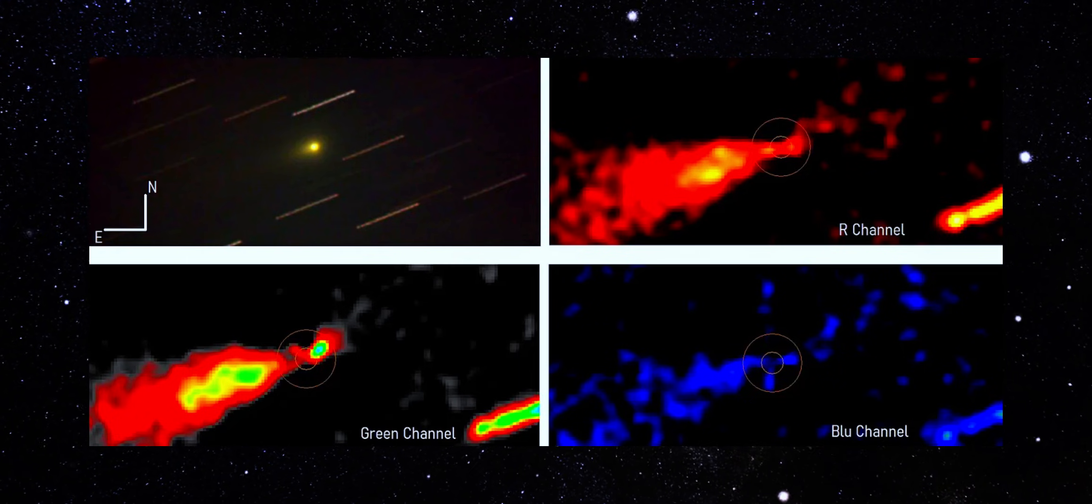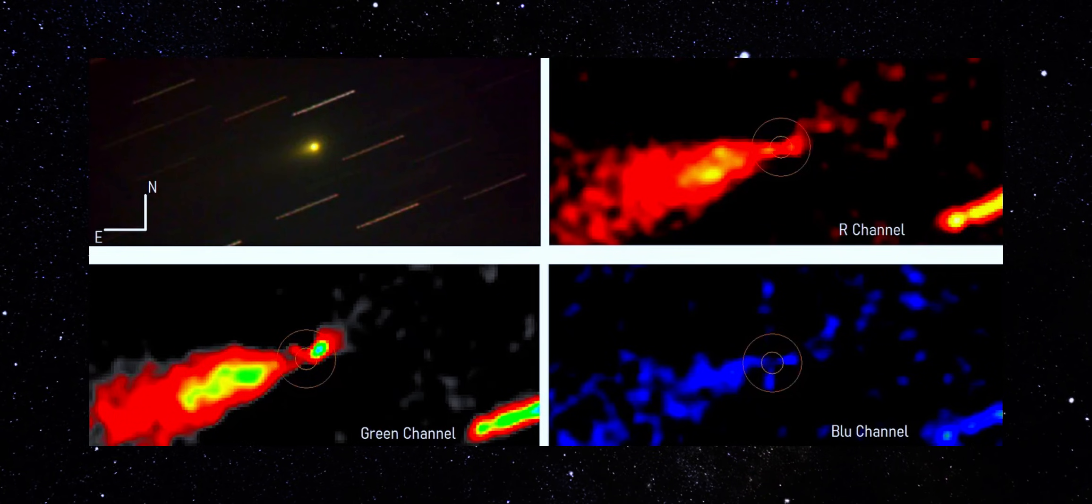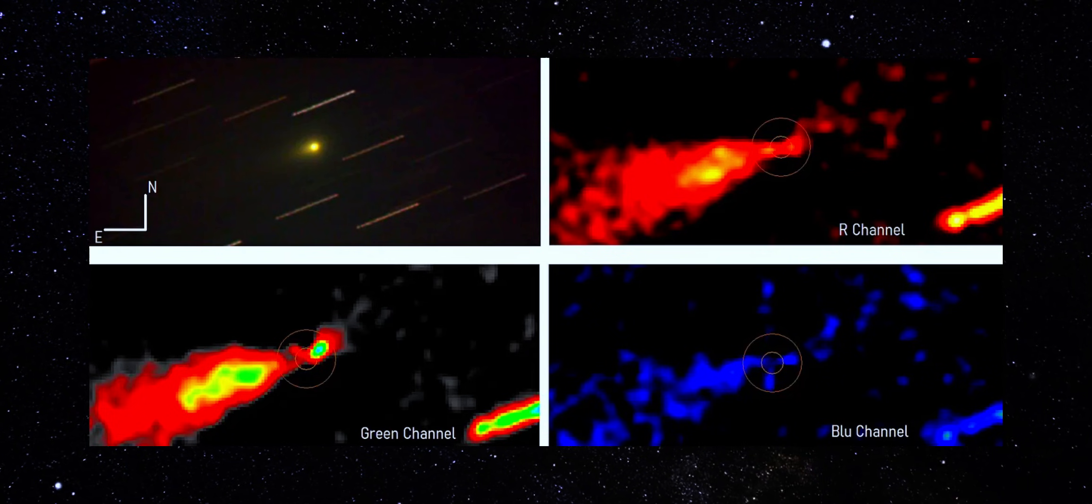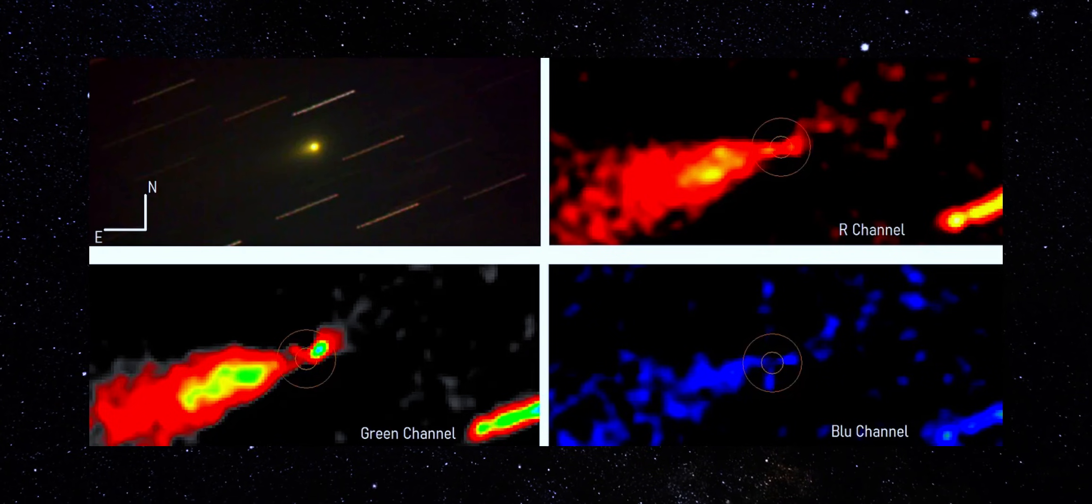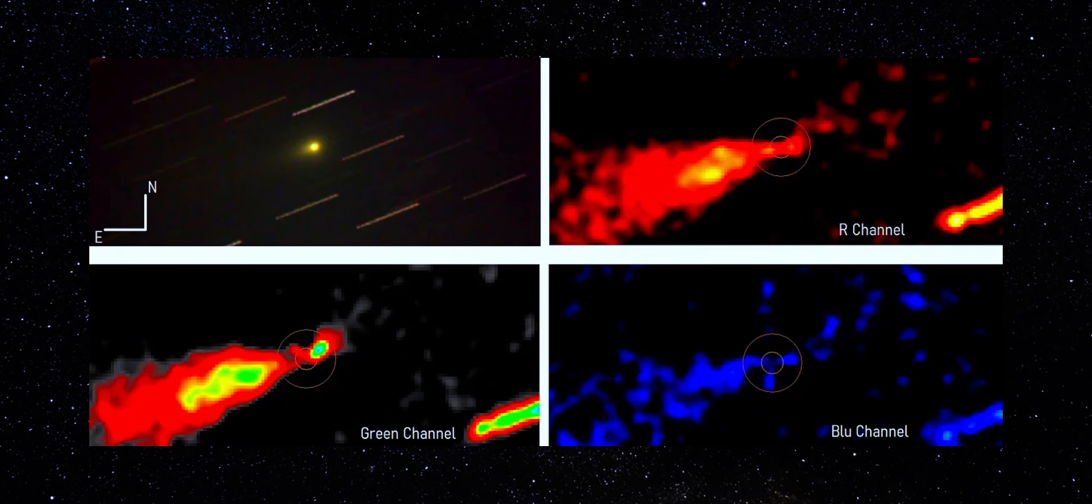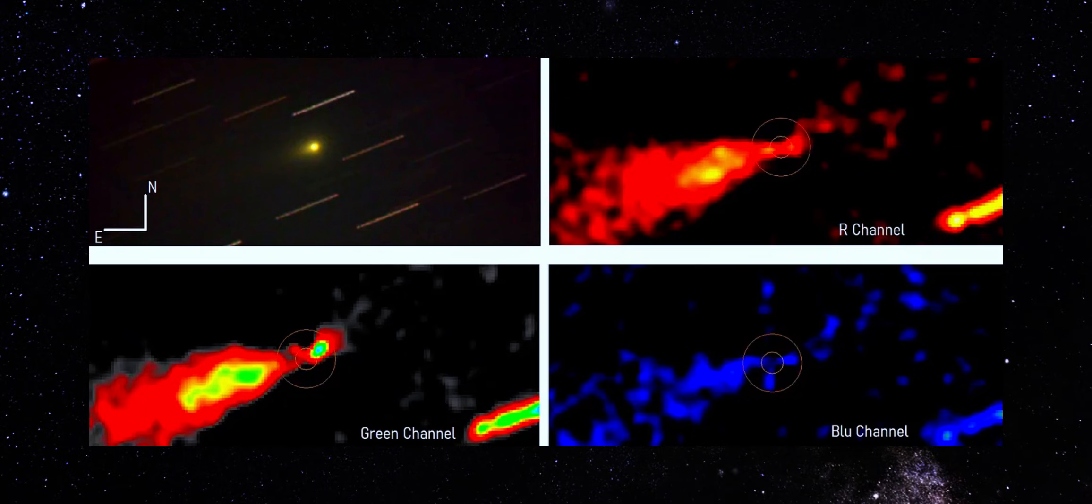The same data is split into red, green, and blue channels and processed independently. That matters because noise behaves differently in each channel. Real structure doesn't. The top left is the reference image, with the object tracked against background stars and orientation marked to establish motion and direction. Everything else builds from that.